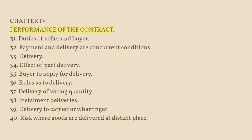Chapter IV — Performance of the Contract. Section 31: Duties of Seller and Buyer. Section 32: Payment and Delivery are Concurrent Conditions. Section 33: Delivery. Section 34: Effect of Part Delivery. Section 35: Buyer to Apply for Delivery. Section 36: Rules as to Delivery. Section 37: Delivery of Wrong Quantity. Section 38: Instalment Deliveries. Section 39: Delivery to Carrier or Wharfinger. Section 40: Risk where Goods are Delivered at Distant Place.